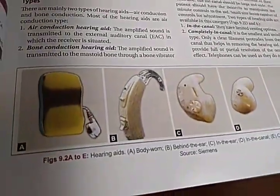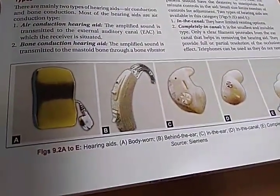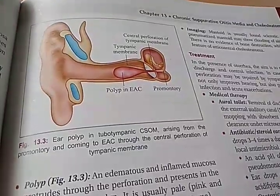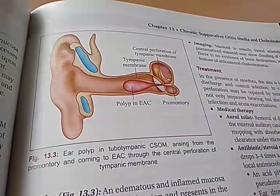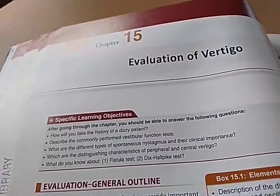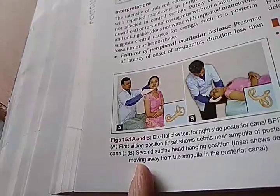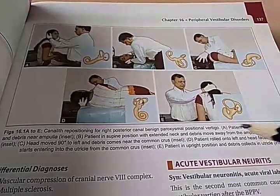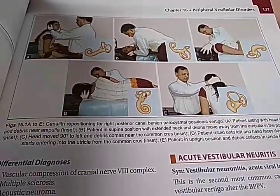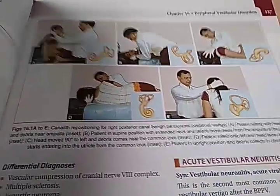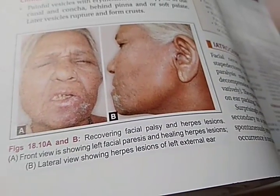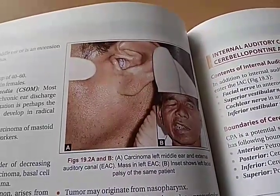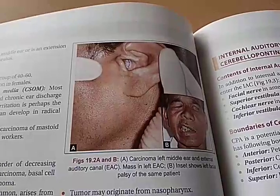Types of hearing aids include body-worn, behind-the-ear, in-the-ear, and in-the-canal. Then they talk about many diseases of the ear like CSOM. They also cover vertigo — this is the Dix–Hallpike test — here they are talking about benign paroxysmal positional vertigo (BPPV). Then facial palsy and facial nerve disorders.